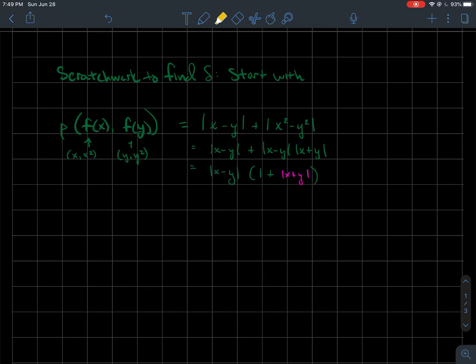So remember, I want to be able to find a delta so that when this is less than delta, then this whole thing is less than epsilon. And in this case, though, I'm a little nervous because I've got this extra factor here. And that's why I've colored it pink. So I want to know, well, how bad is this if this is less than some number delta? So let's pick a concrete number delta. Let's say that the distance between x and y is less than one. Let's see what does that tell me about this expression?